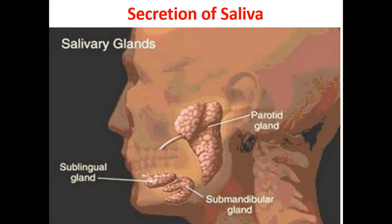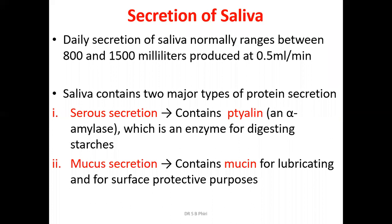Daily secretion of saliva normally ranges between 800 to 1500 milliliters, at a rate of about 0.5 milliliters per minute. Saliva contains two major types of protein secretions. Serous saliva contains a protein called ptyalin, which is salivary amylase — an enzyme for digesting starch. Cooked starch can be digested in the oral cavity by salivary amylase.